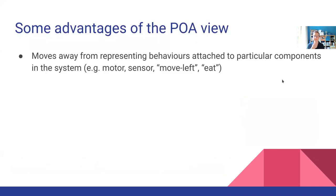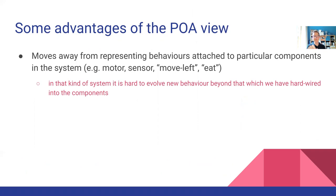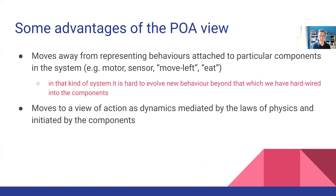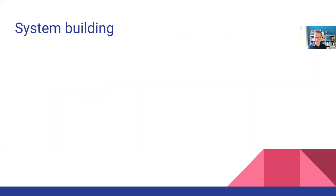Some advantages of this approach: it moves away from representing behaviours attached to particular components in the system. Lots of Artificial Life software systems have components which move left, eat, or have motor-sensor properties. If you have that, it's very hard to evolve beyond what you've already pre-programmed into the system. So this moves more towards a view of action as dynamics mediated by the laws of physics and initiated by these components.